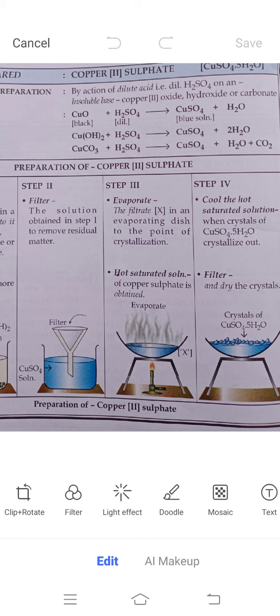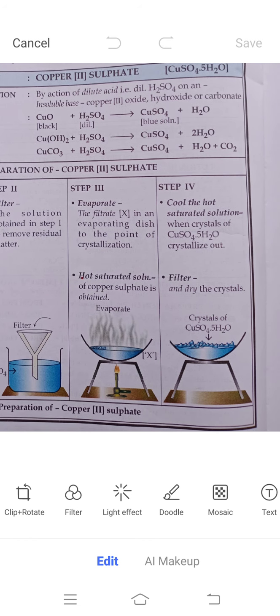In step three, we are going to evaporate the copper sulfate solution. Why do we evaporate? Because on evaporation water will get removed and the left behind will be our product, copper sulfate. Here the filtrate is in an evaporating dish heated to the point of crystallization, so hot saturated solution of copper sulfate is obtained.